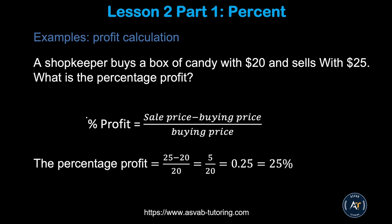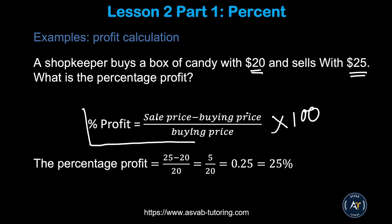Now let's learn how to calculate profit. The formula is: percent of profit = (selling price − buying price) ÷ buying price × 100. For example: buying price = $20, selling price = $25. Plug in: (25 − 20) / 20 × 100 = 5/20 × 100. Simplify 5/20 to 1/4 = 0.25, then move two decimal places to get 25% profit.